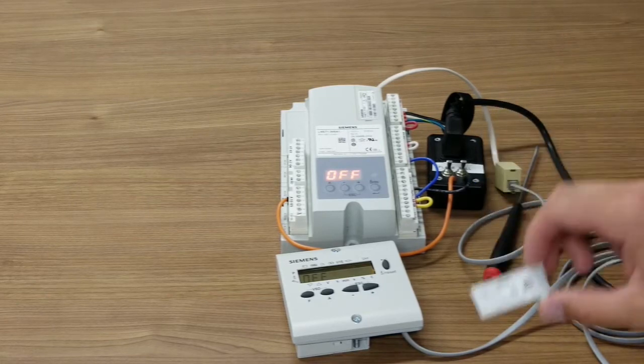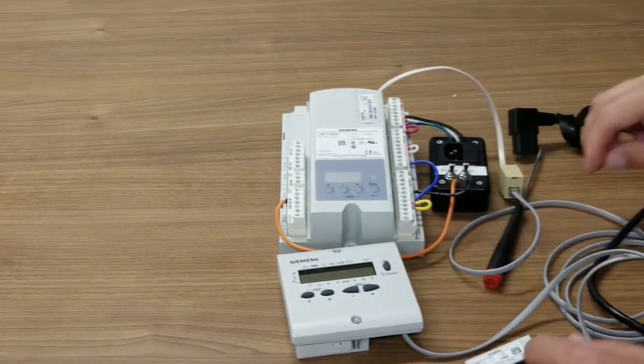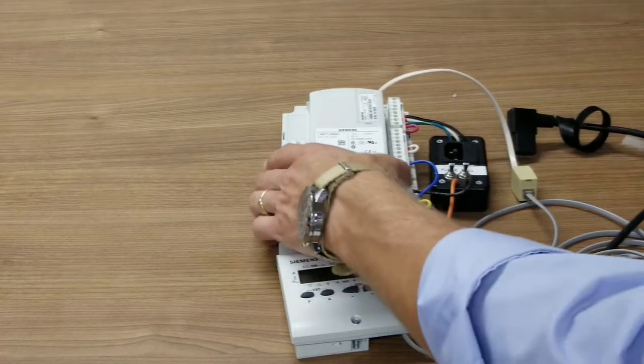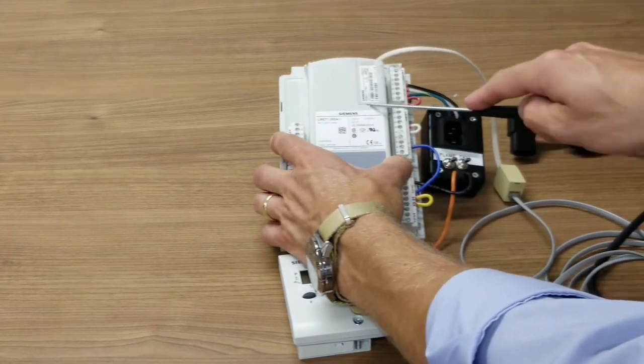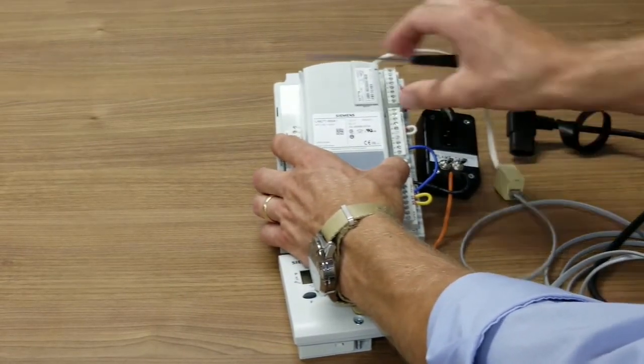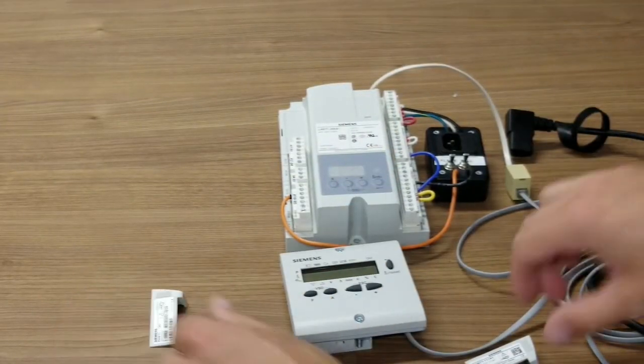So to change the PME, the first step is to remove power from the control. And then using a fingernail or a screwdriver, simply pry this up and lift it out. Set the old one aside.